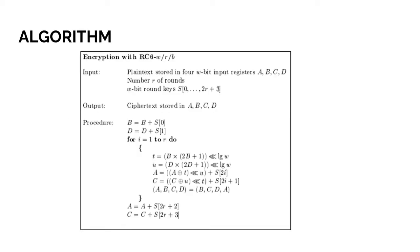So now we will go for the algorithm for the encryption with RC6. The input will be plaintext stored in four w-bit input registers ABCD, number R of rounds, w-bit round keys S0 till 2r plus 3. The output will be ciphertext stored in ABCD. For the procedure, B equals B plus S0, D equals D plus S1. Then for i equals 1 to 2r do.